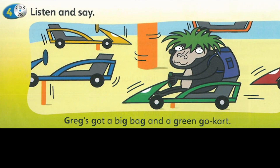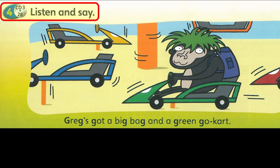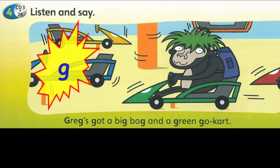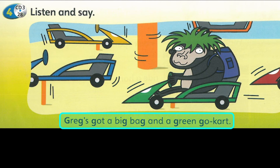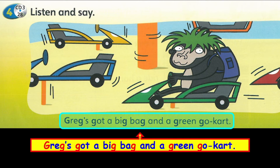Thunder says 'Give me the right leg.' Students' Book, page 99. 4. Listen and say. G, G. Greg's got a big bag and a green go-kart.